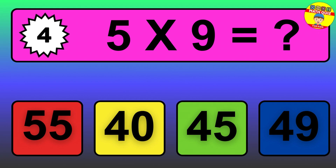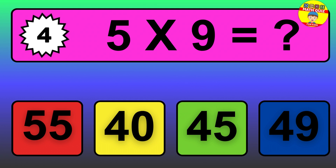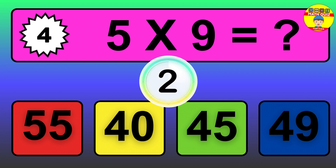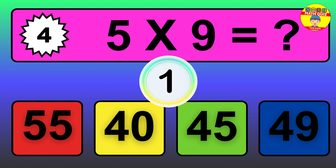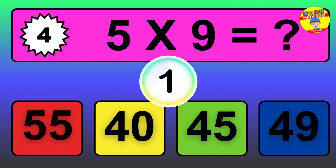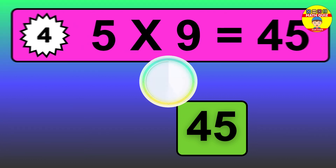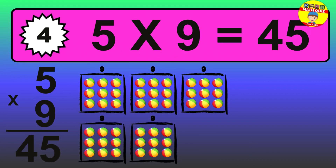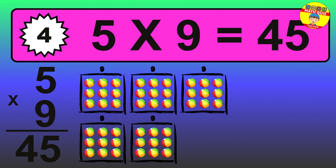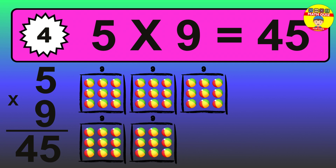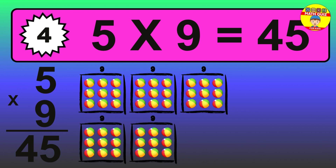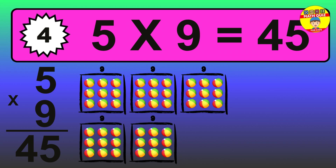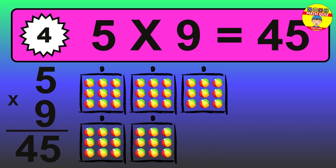Question 4. 5 times 9 equals what? The answer is 5 times 9 is 45. To calculate, we have 5 groups with 9 balls each one. So, how many balls do we have? 45 balls.